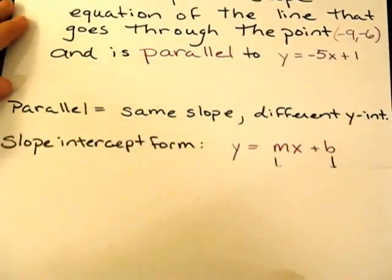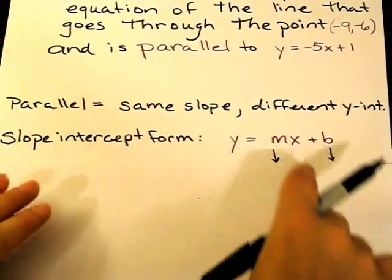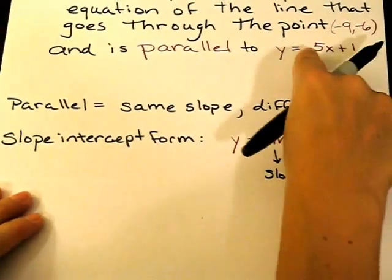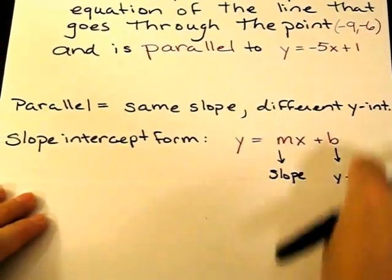So this form is actually in my slope-intercept form, y = mx + b, the m is slope, the b is the y-intercept.